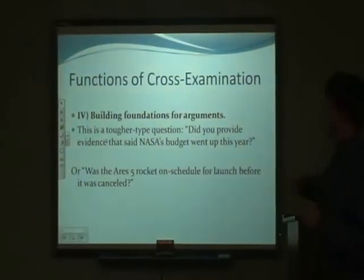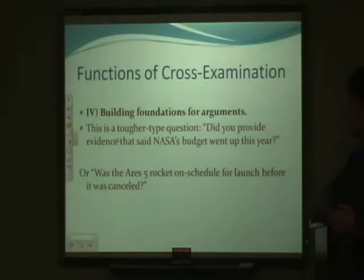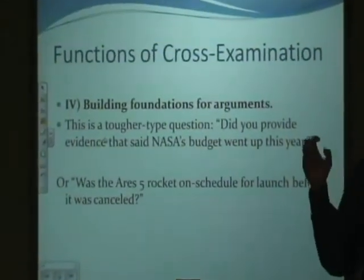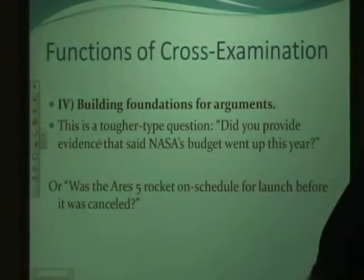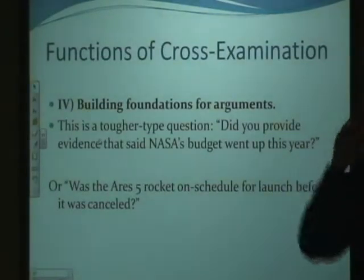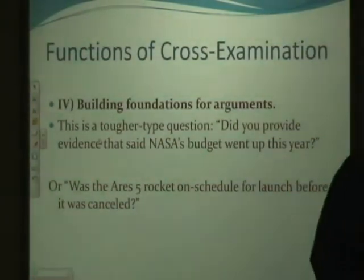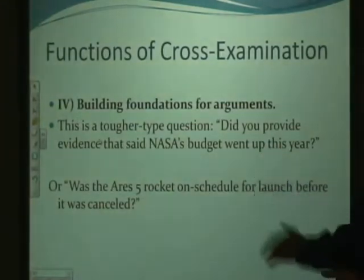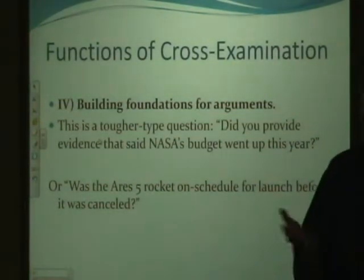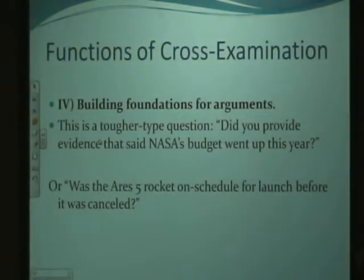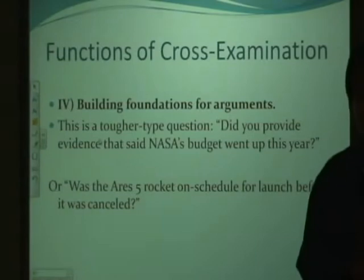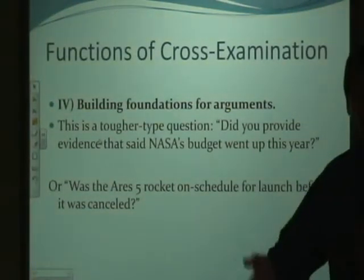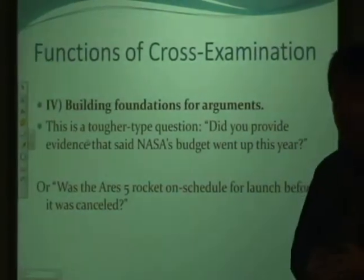The fourth function is building a foundation for an argument — a little bit more jousting. For example: 'Did you provide evidence that said NASA's budget went up this year?' Maybe your opponent made the claim but didn't have proof. If they say, 'No, I didn't have that evidence in my speech,' then later you can say, 'My opponent said NASA's budget went up, but there was no proof.' Or on the negative side, you could ask: 'Was the Ares V rocket on schedule for launch before it was canceled?' — setting up a solvency argument that the rocket really wasn't going to be ready.